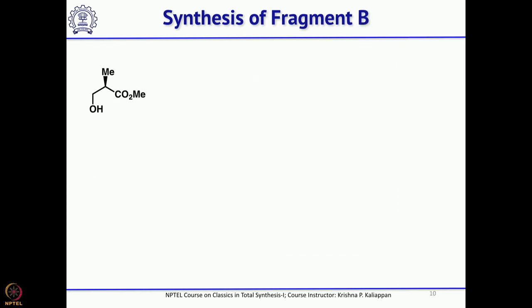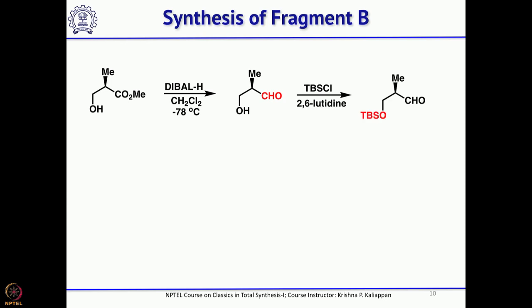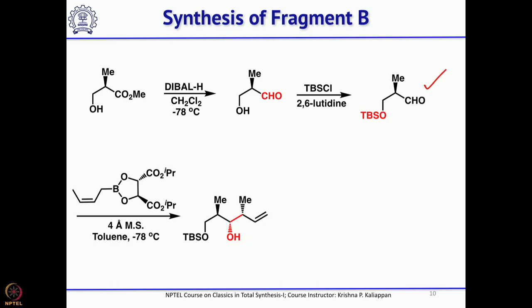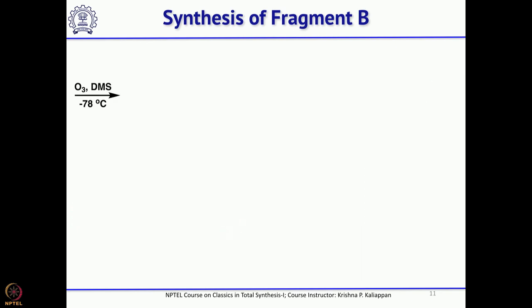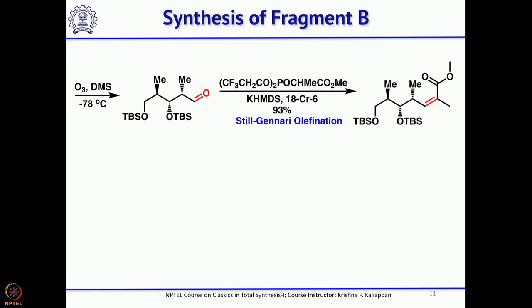The next step was to make fragments B and C. For fragment B, he again started with the same Roche ester — in two steps he could get the aldehyde in good yield. But instead of trans-crotylboration, he used cis-crotylboration so that he could get the syn-aldol product. Once the syn-aldol was obtained, the secondary alcohol was protected as a TBS ether and the double bond was ozonolyzed to get the aldehyde.